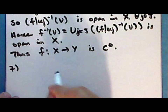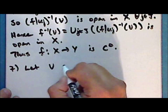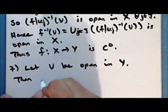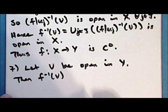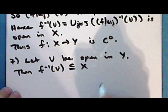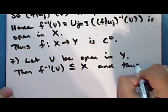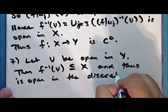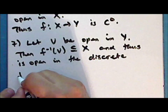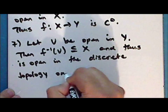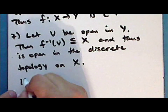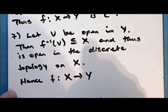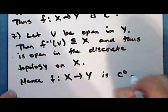Seventh statement: let V be open in the space Y. Then the inverse image of V under F is a subset of X, and thus is open in the discrete topology on the space X. Hence the function F mapping the discrete space X into any arbitrary topological space Y is continuous.